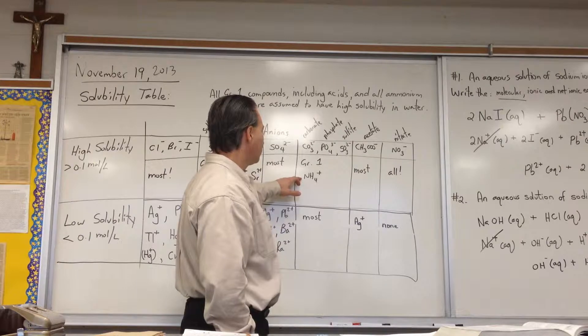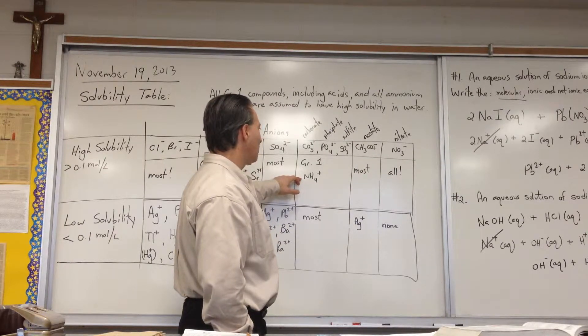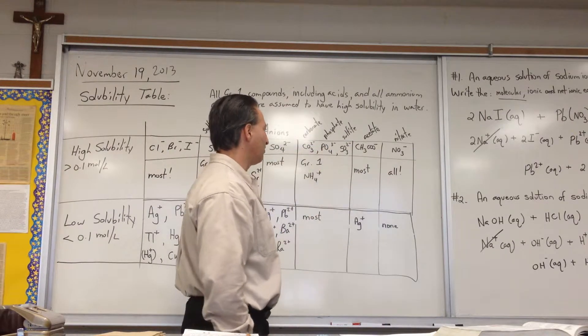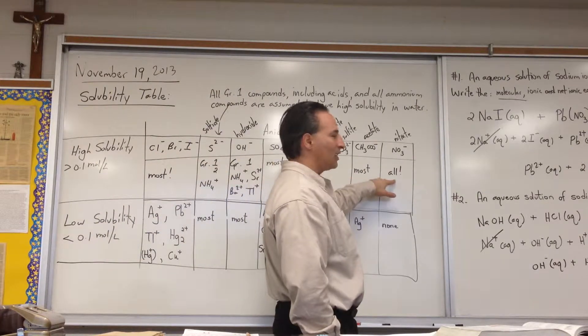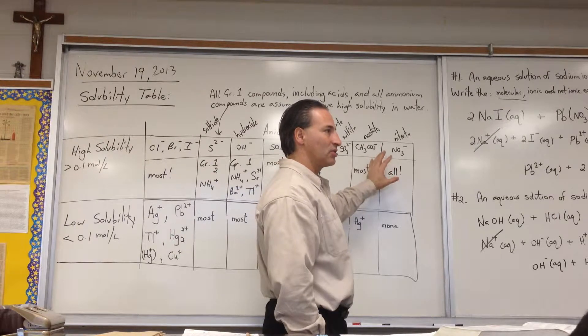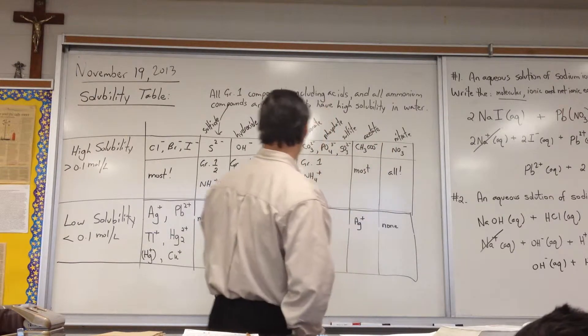Most sulfates are considered soluble. Most group 1 and ammonium salts of carbonate, phosphate, and sulfite are soluble. Most acetates are soluble. And all nitrates are soluble. If you want a soluble salt, a nitrate is the way to go.